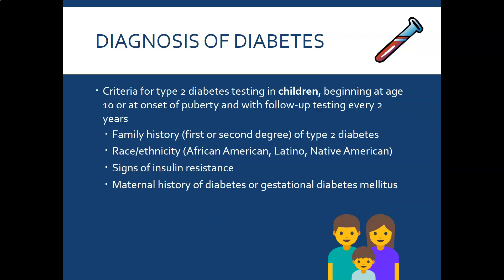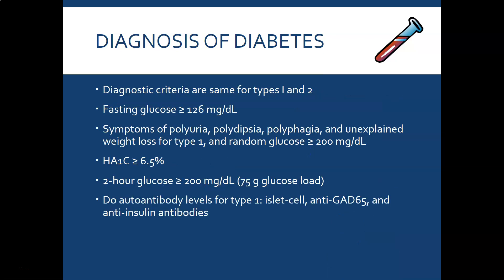For Type 2 diabetes testing in children, screening begins at age 10 or at the onset of puberty, with follow-up every two years. Risk factors include a first- or second-degree family history of Type 2 diabetes — including siblings, parents, aunts, uncles, or grandparents — race/ethnicity of African-American, Latino, or Native American, signs of insulin resistance or abdominal obesity, and maternal history of diabetes or gestational diabetes.